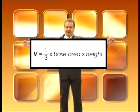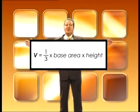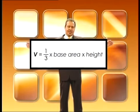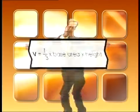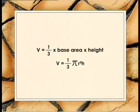If R is the radius of the base of a cone and H is its height, then the volume of the cone is given as V = (1/3) × base area × height = (1/3)πR²H.